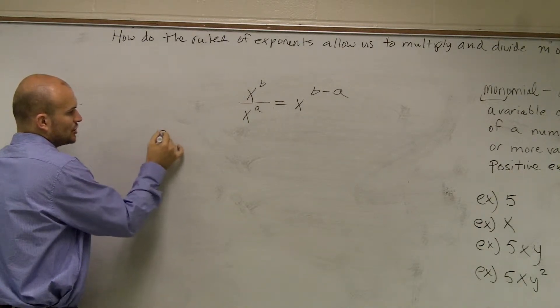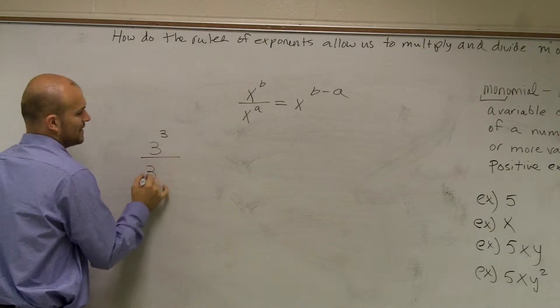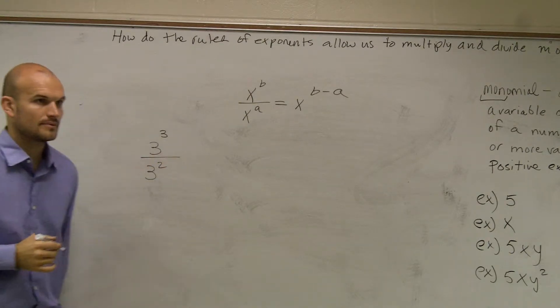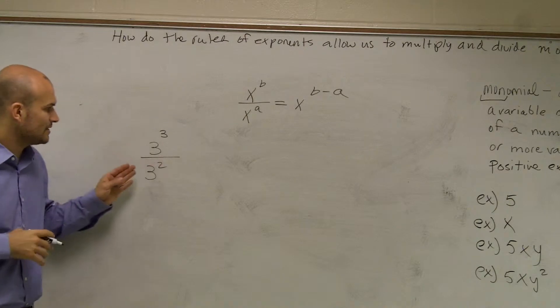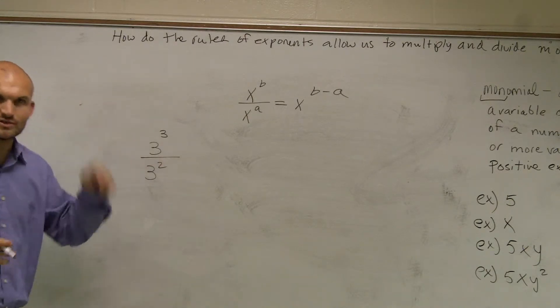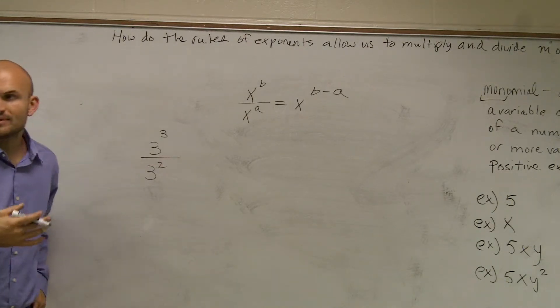What if I had 3 cubed divided by 3 squared? OK, those are both two monomials. So if I had 3, actually, yeah, let's just do the same example. So a couple things we need to remember.